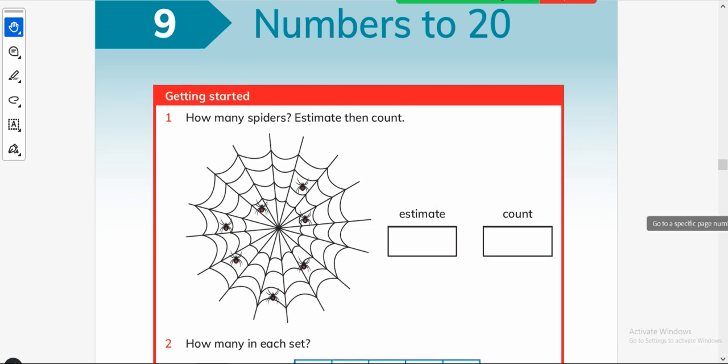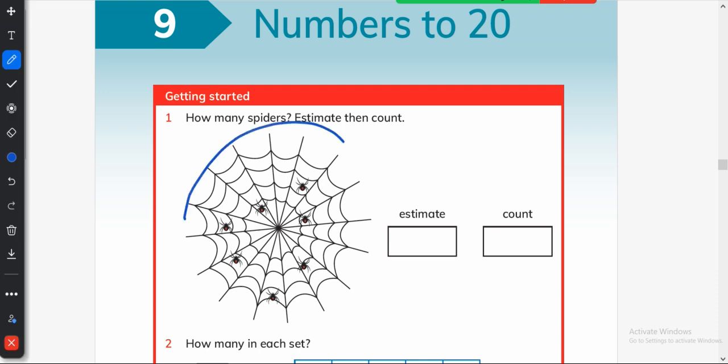The very first thing we will discuss in the class is estimate. What is estimate? Estimate is an educated guess. For example, how many spiders are there? I think there are 6. Now let me count them: 1, 2, 3, 4, 5, 6 and 7. They are 7 in all. So my estimate was very much close to it. I am right in estimating the things.